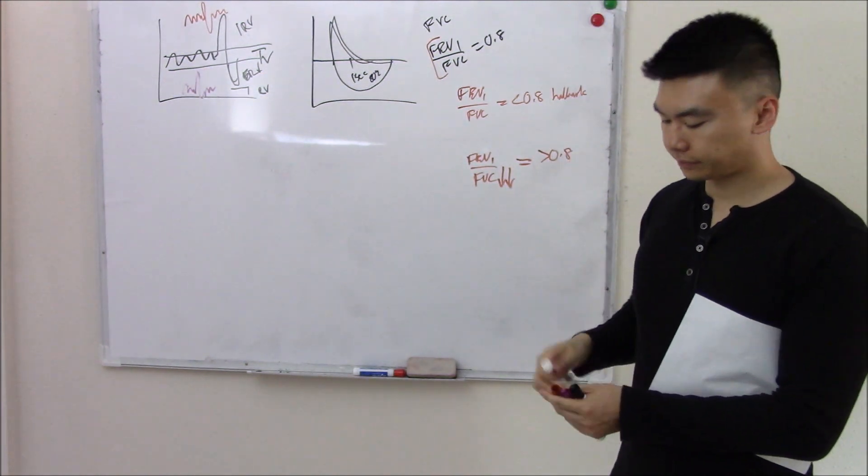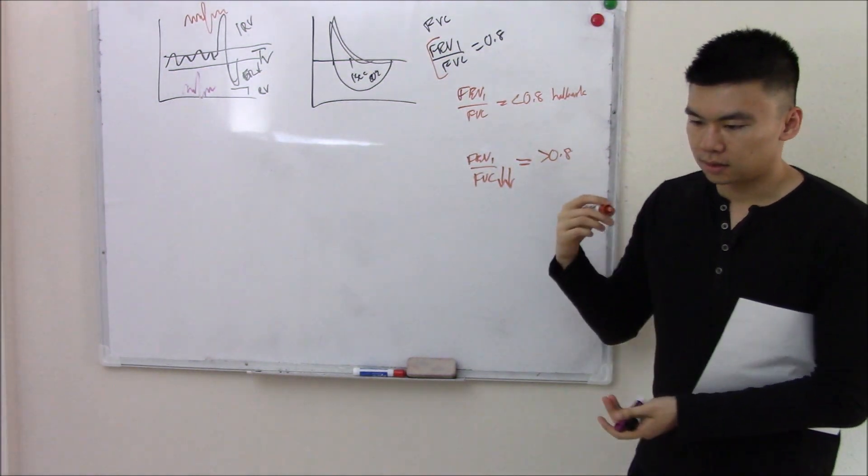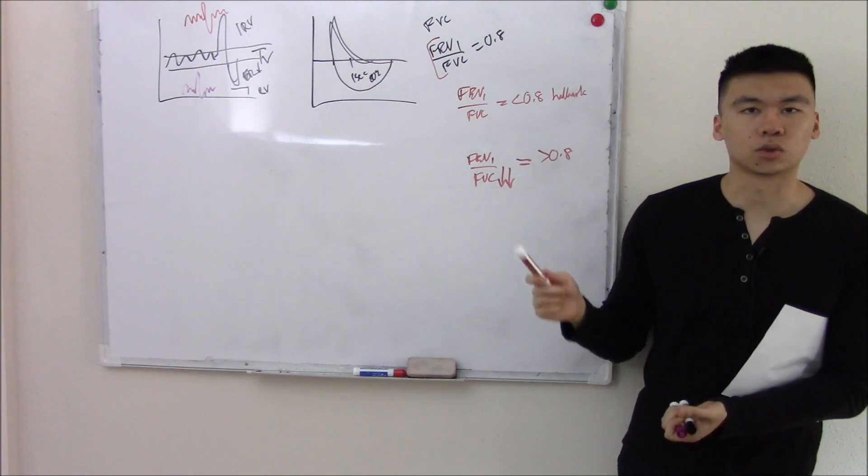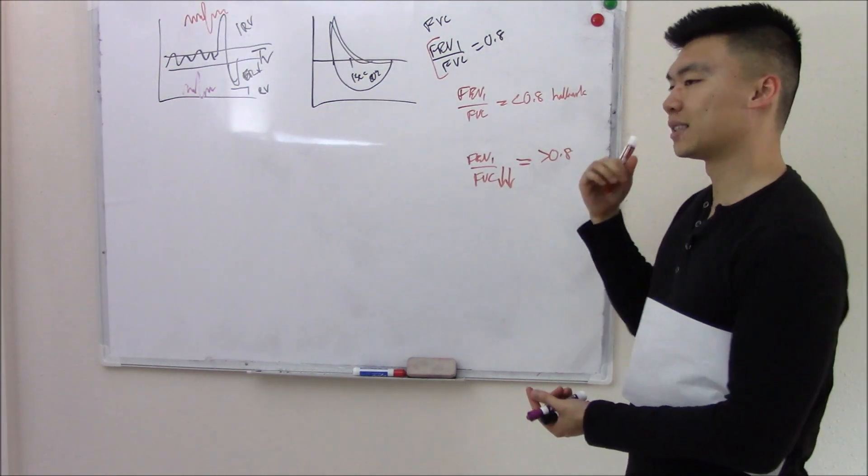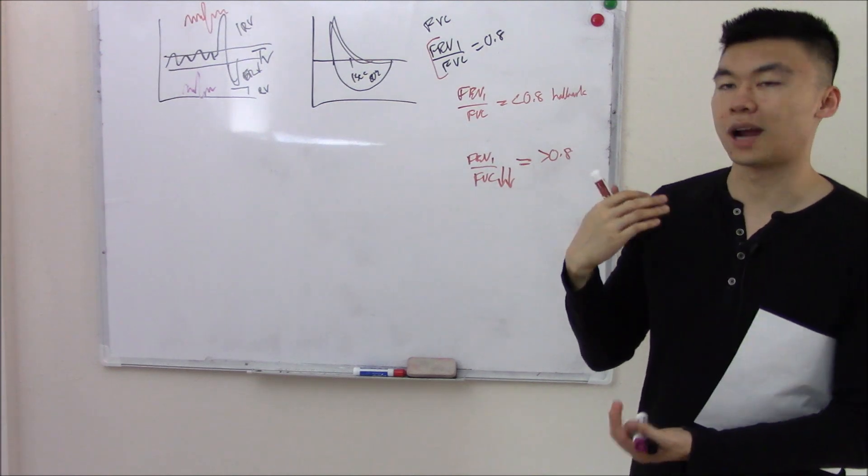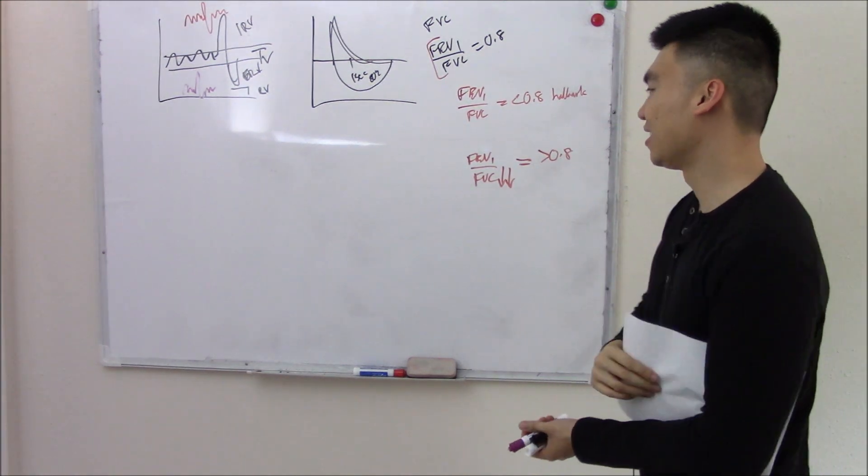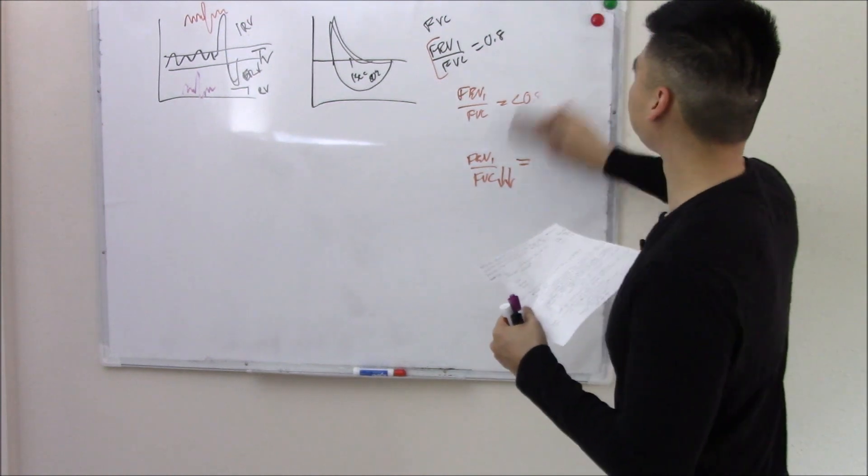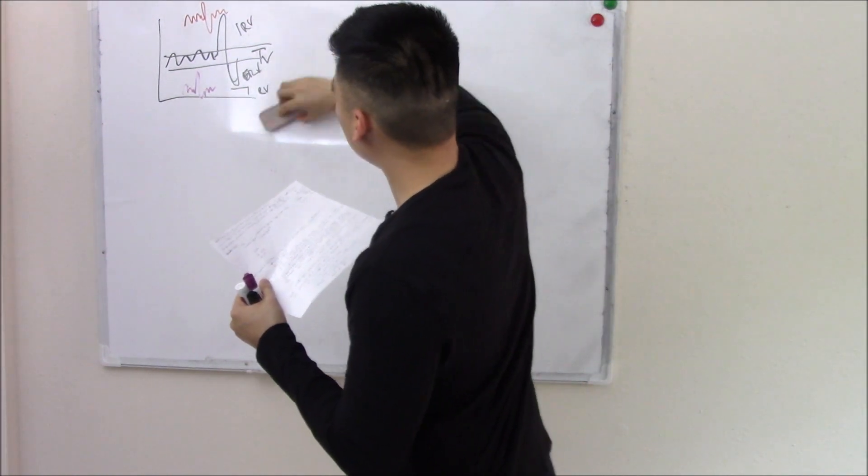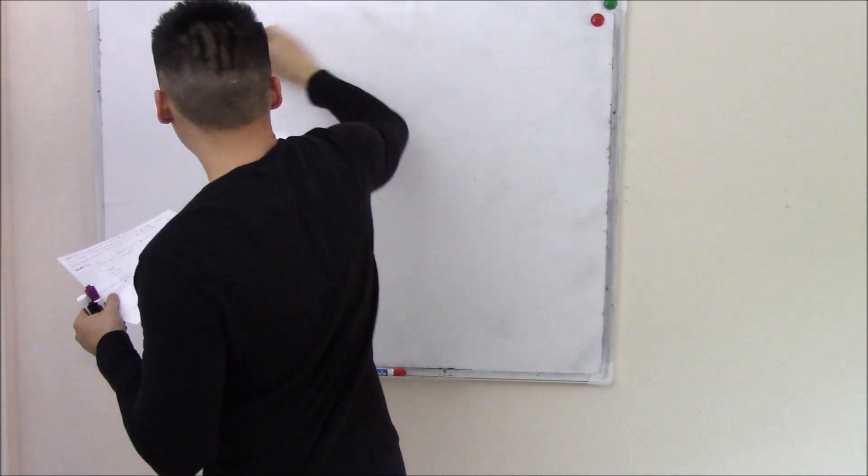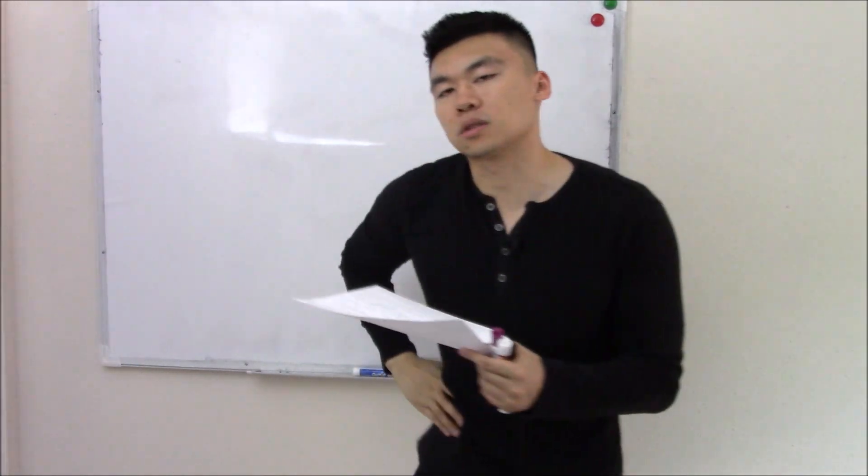A lot of questions on these disorders deal with spirometry readings. If you can decipher the spirometry readings, then you're halfway there. Those are the lab findings. Now what causes that inability to expand your lungs in the first place? What causes that corset?